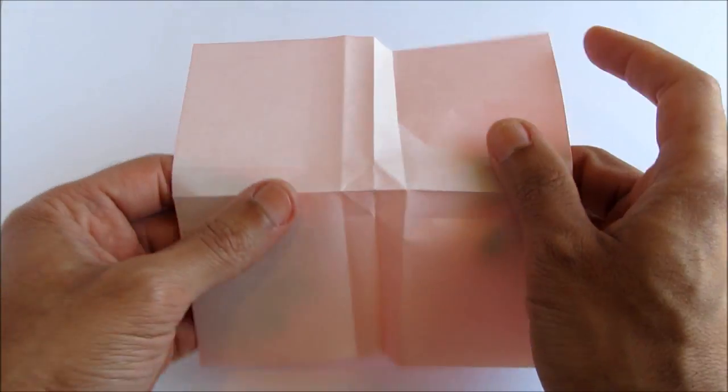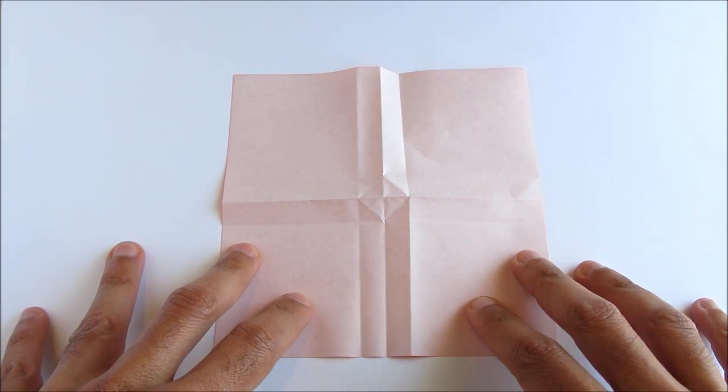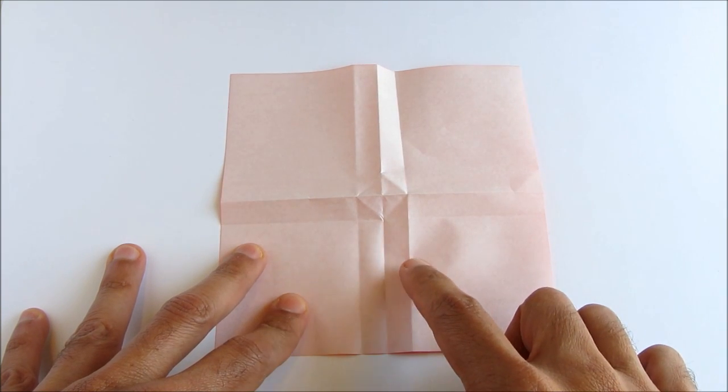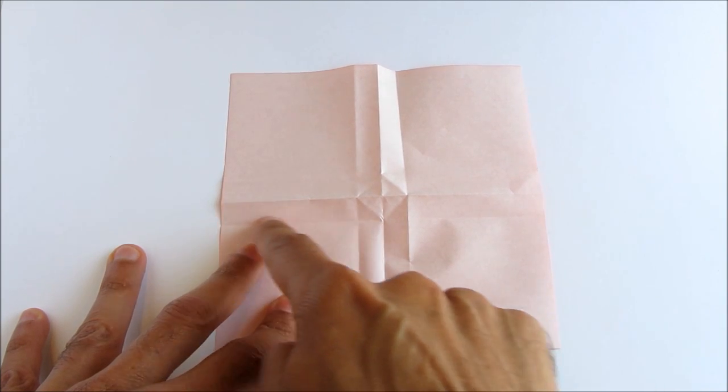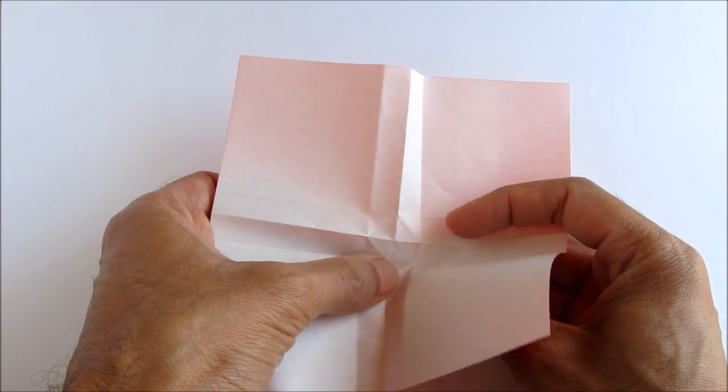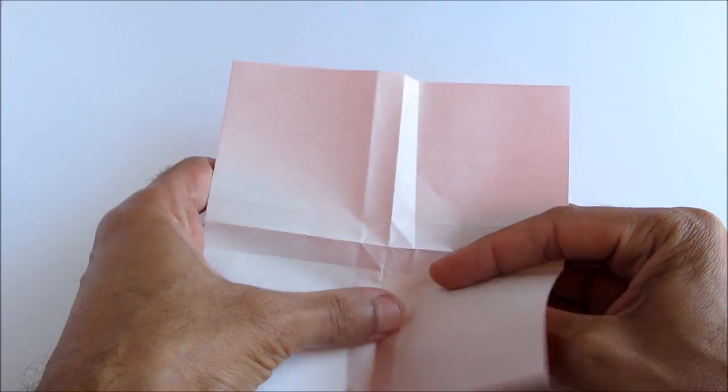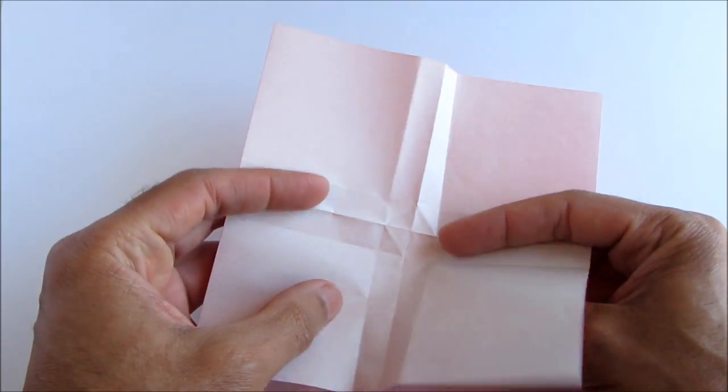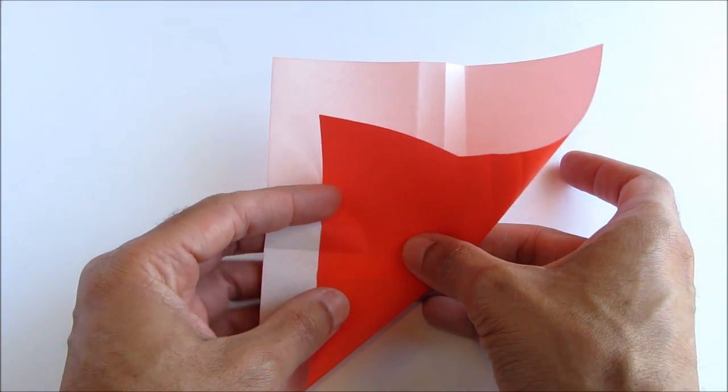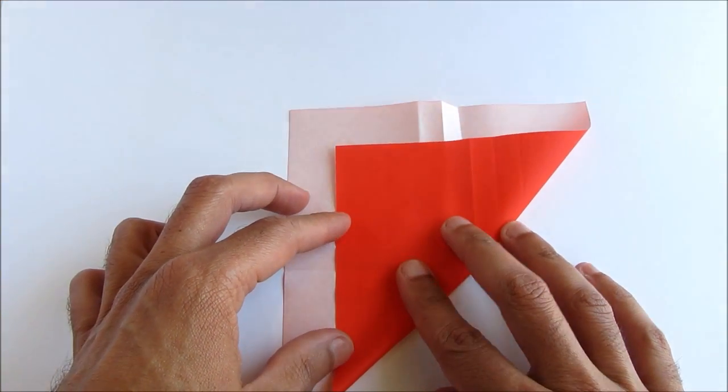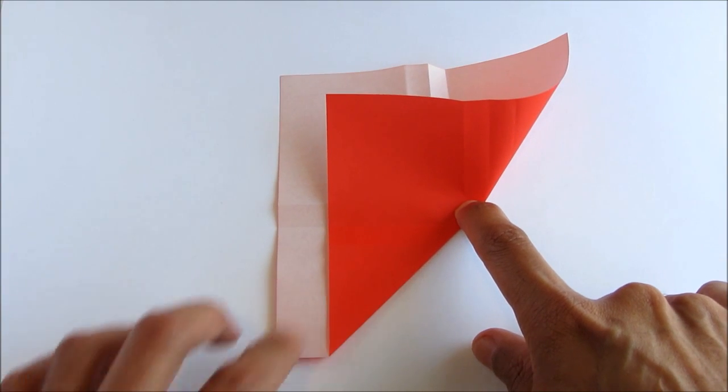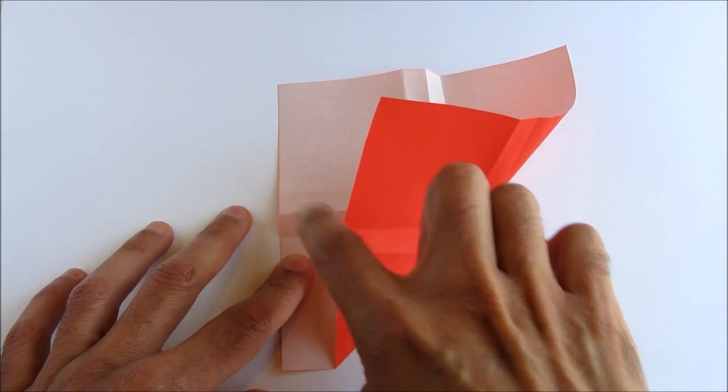Now we're going to unfold the entire paper, and we're going to take this line, this mountain fold, and fold it up and to the left, to this valley fold here. So just like we're showing here. Fold it across like that, and then crease only the lower part of the paper from the center to the edge. And unfold that.